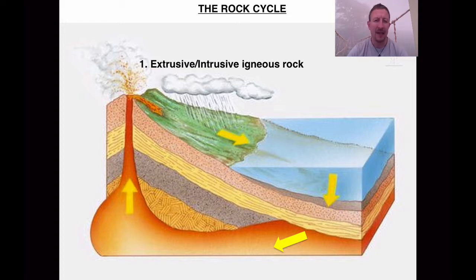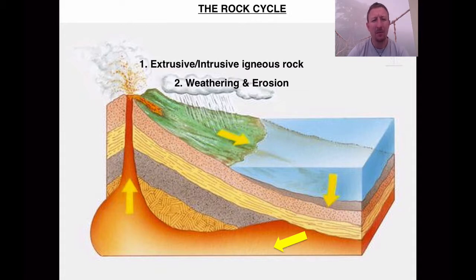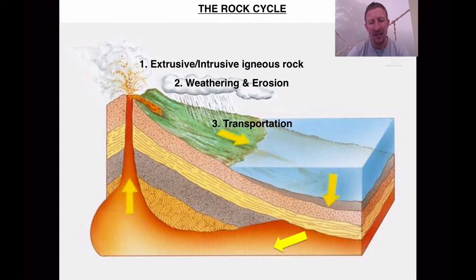What can happen to that extrusive igneous rock? Well, there's a variety of things. It could go back into the earth and be remelted and never change. However, the next stage it may undergo is weathering and erosion. Weathering splits up the igneous rock, and then under the process of running water and gravity it's going to move down to the lowest part of the planet — which is obviously the seabed. So we get this transportation process, where the igneous rock has been broken down and transported with other types of rock from all over the world, and they end up deposited on the seabed.